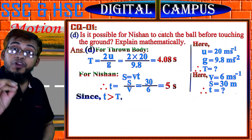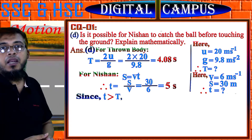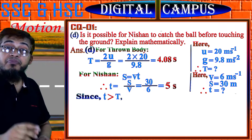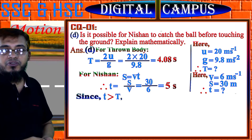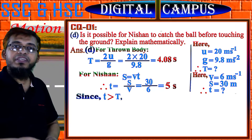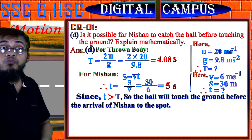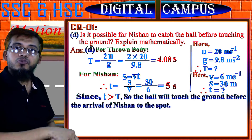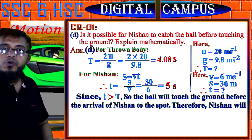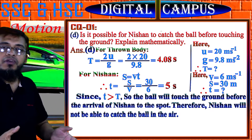So after throwing the ball, the ball takes 4.1 seconds to touch the ground. But Nishan takes 5 seconds to reach the spot where the ball touches the ground from a distance of 30 meter. So the ball will touch the ground before the arrival of Nishan. Therefore Nishan will not be able to catch the ball in the air — it is impossible for Nishan to catch the ball in the air.